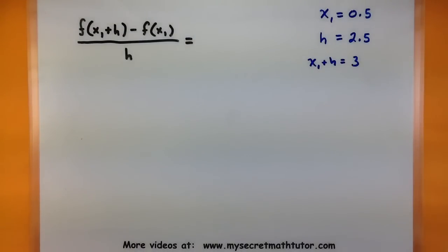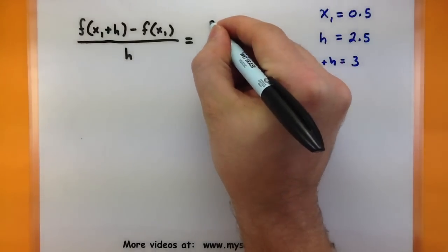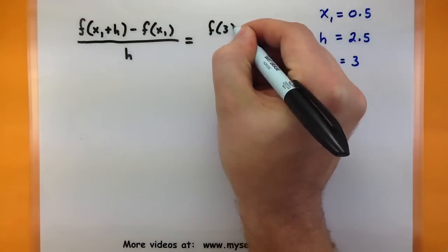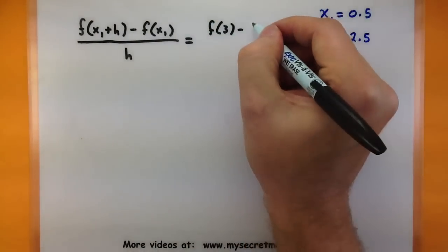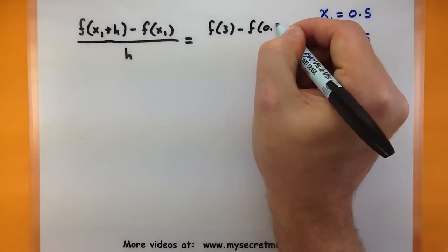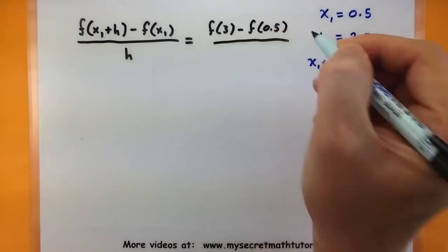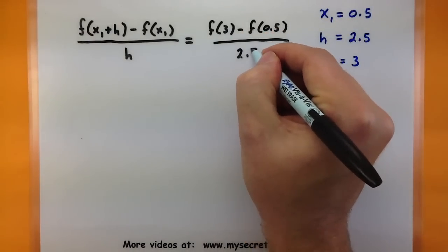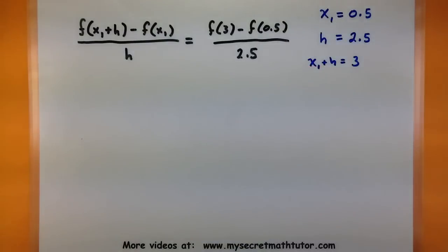Let's put this into our difference quotient and interpret the pieces. The way we can interpret our function is it's basically giving us a distance at a particular time.